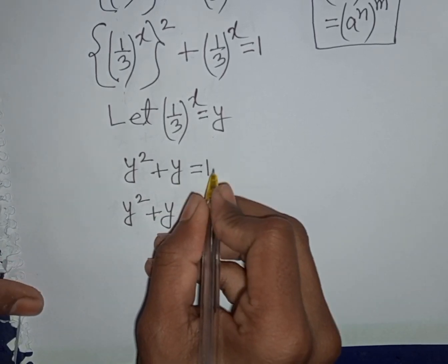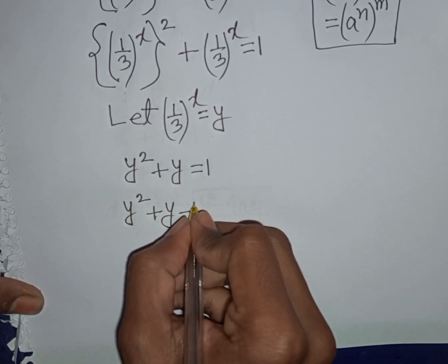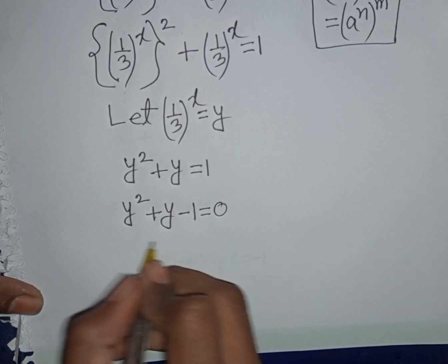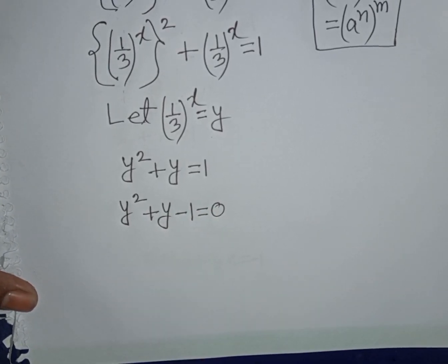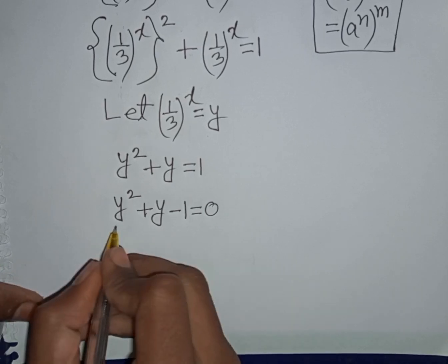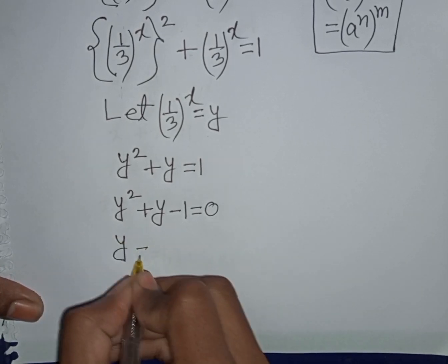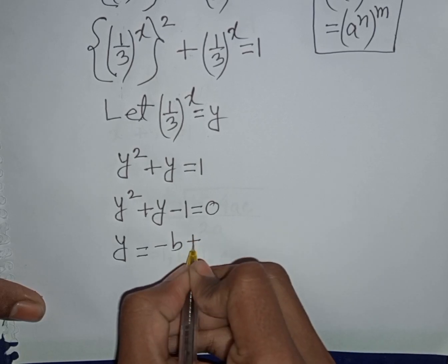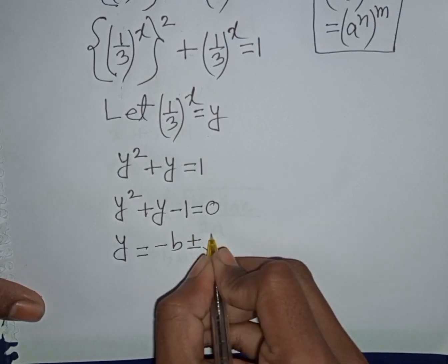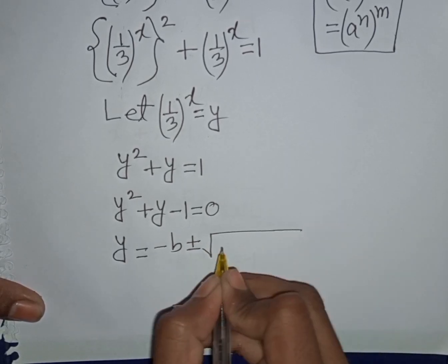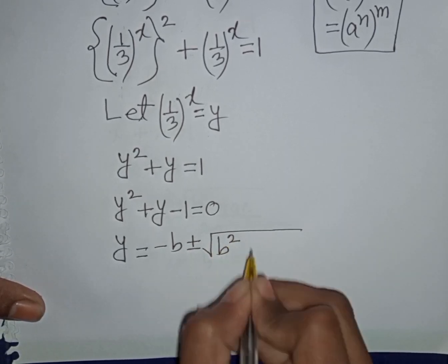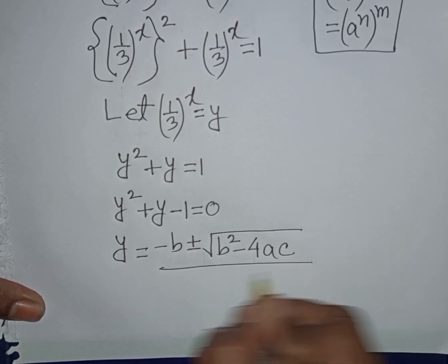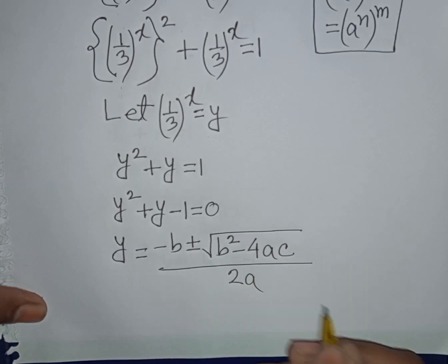Taking the +1 to the left side gives minus 1, so we have y² + y − 1 = 0. Now we apply the quadratic formula: y = (−B ± √(B² − 4AC)) / 2A.